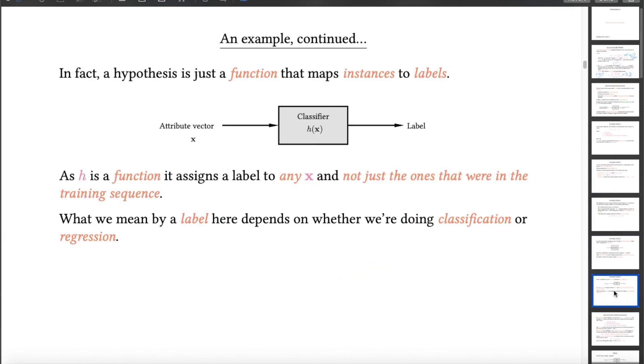And that means that we can actually model a hypothesis as just being a function. It's a function that will take any attribute vector, even one we haven't seen before, and turn it into a label. Or in the case of the running medical diagnosis example, it will take a feature vector from any patient at all, whether they've been seen before or not. That attribute vector can be plugged into the hypothesis, and the hypothesis is just a function. So it outputs a label, and we hope that the label is the correct one.